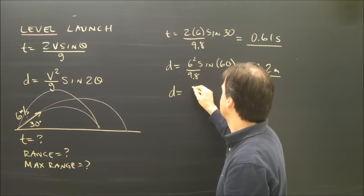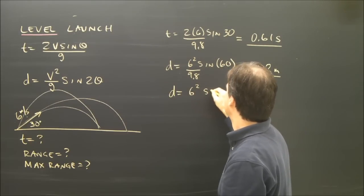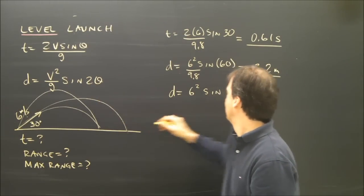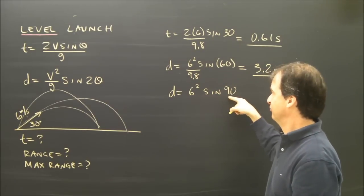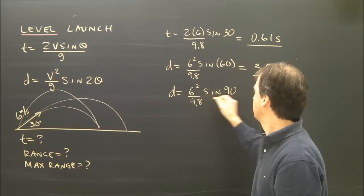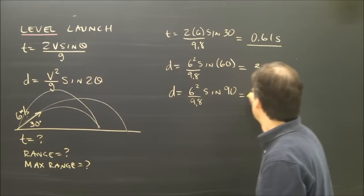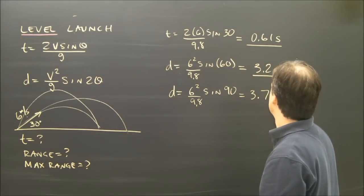So the maximum range is 6 squared sine 2 times 45 because it's 2 times the angle is 90, which is 1. So divide that by 9.8, and I think we got that the maximum range was rounded off 3.7 meters.